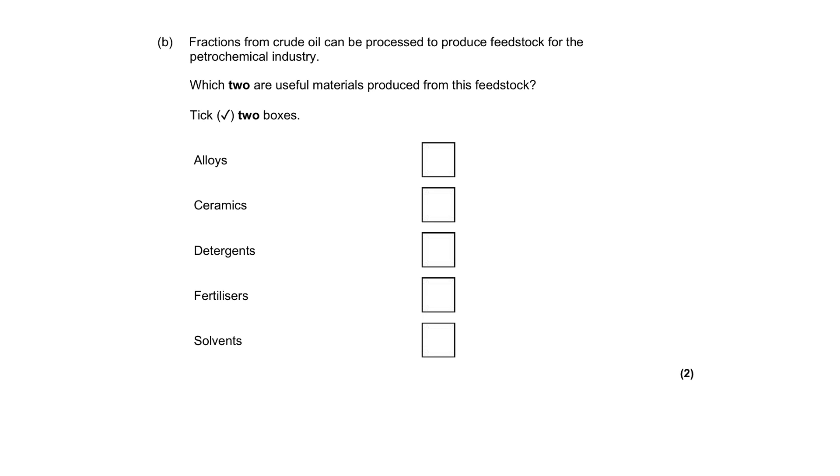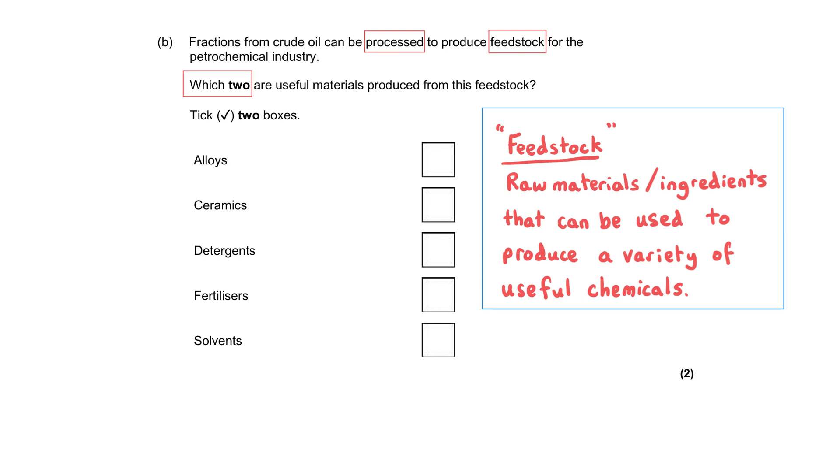Fractions from crude oil can be processed to produce feedstock for the petrochemical industry. Which two are useful materials produced from this feedstock? And that's what feedstock is. It goes into a second set of processors. And the crude oil fractions get converted into new substances that have got new uses. And we're told that we need to tick two boxes because there are two marks up for grabs here.